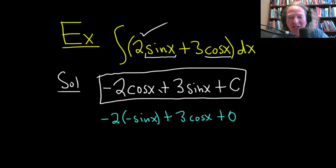Brain failure, right? So just checking this, differentiating: derivative of cosine is negative sine, derivative of sine is cosine, derivative of C is 0.